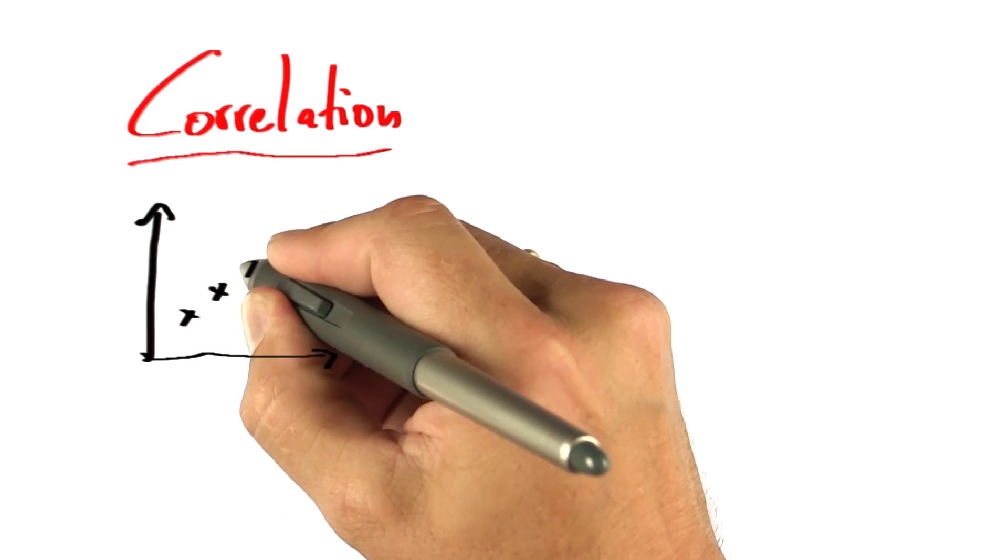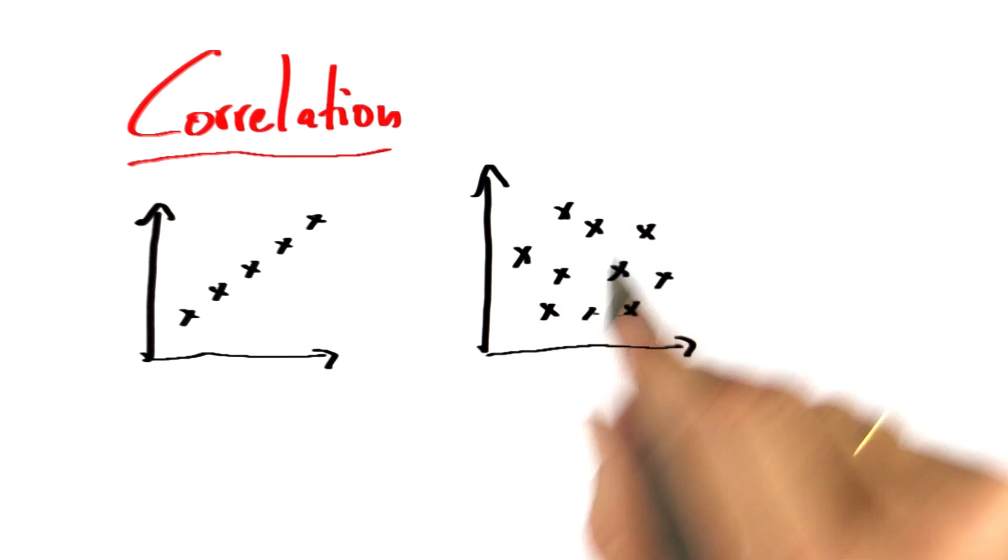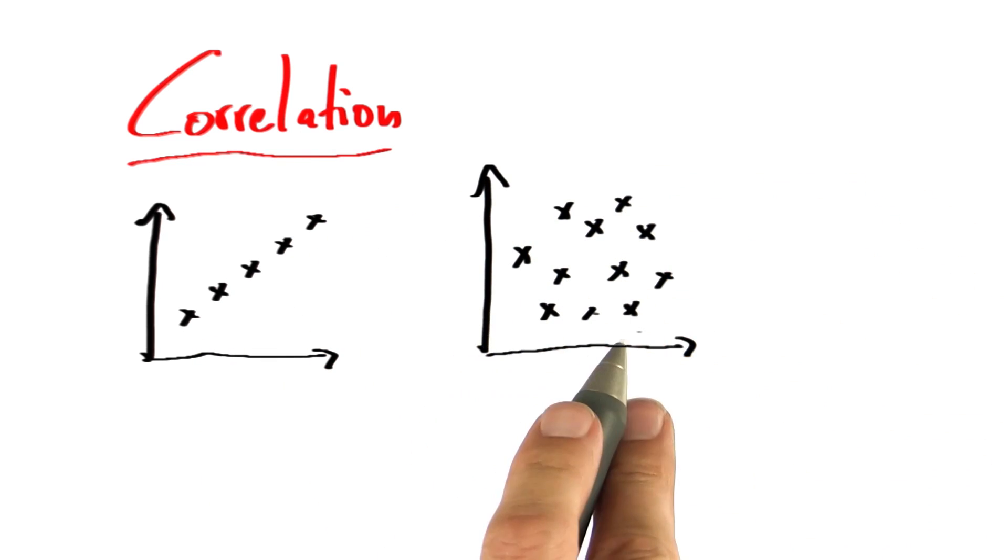Here's the fundamental problem. Sometimes, data lines add very nicely, like these points over here. Other times, two variables seem to be utterly unrelated.